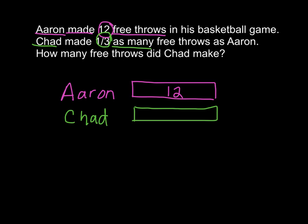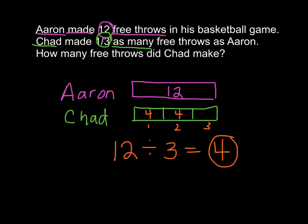Chad's bar is equal to Aaron's bar, but this time our denominator is three, so we divide that bar into three parts to find one-third of Aaron's bar. We take his total, 12, and divide it by the number of pieces, which is three. We find that each piece is worth four, because four times three is 12. Chad had one-third — that means only one of these pieces. So Chad made four free throws, because four times three equals 12.